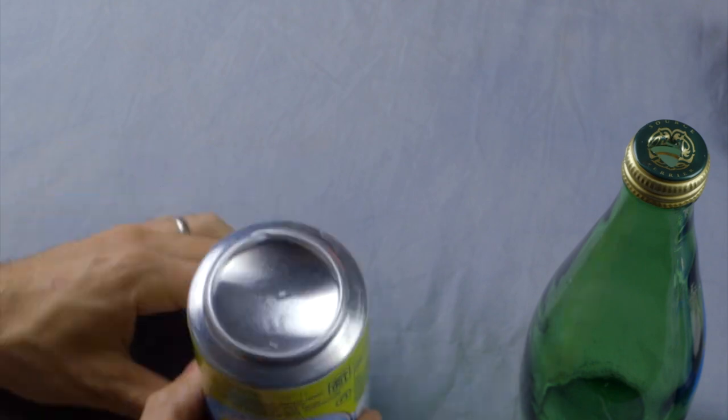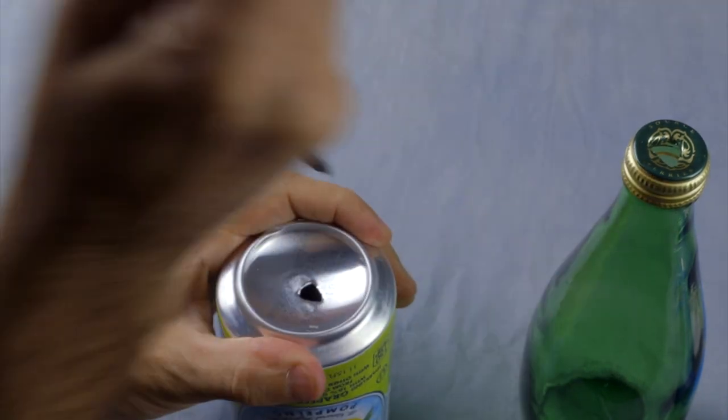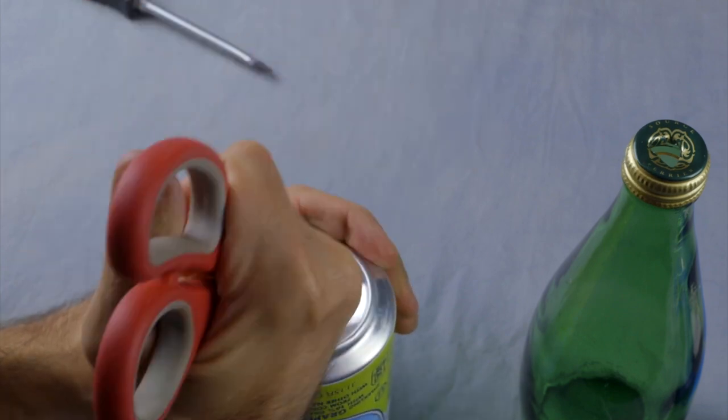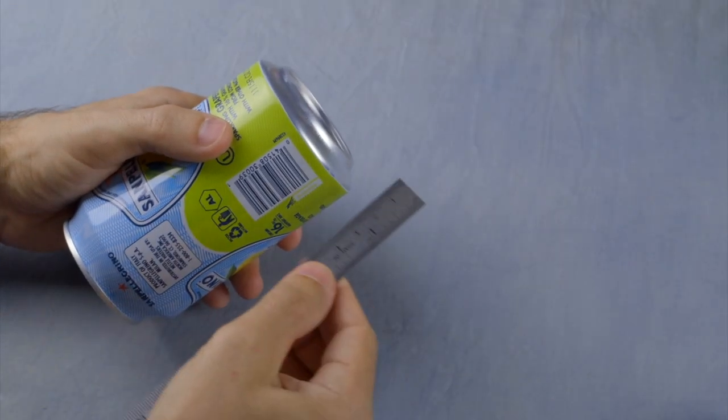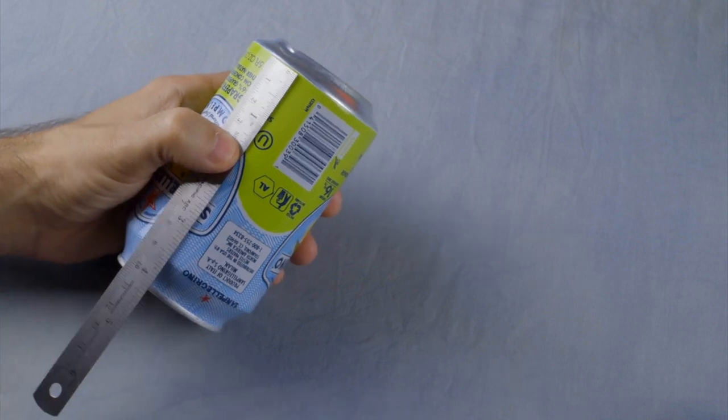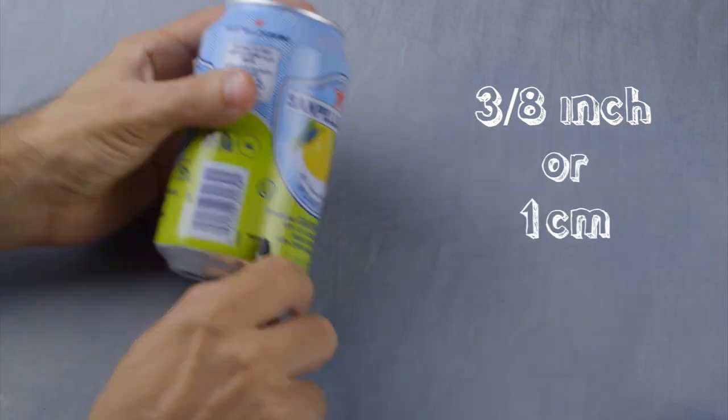Take one of the aluminum cans and make a matching hole in the center of the bottom end. Now mark both of your aluminum cans about 3/8 of an inch or 1 centimeter from the bottom edge, like this.